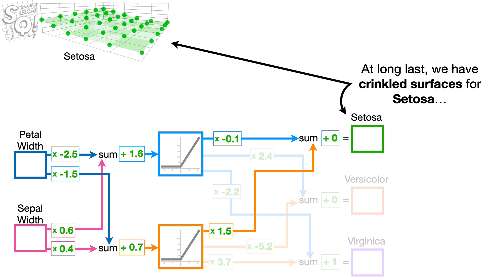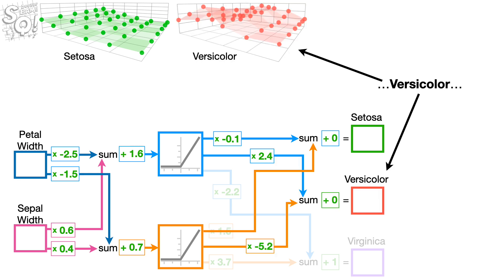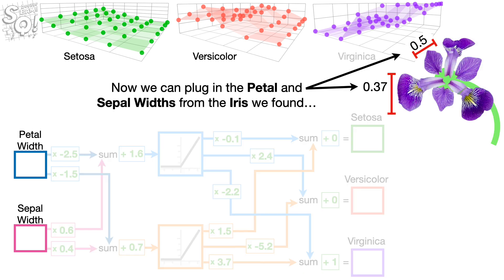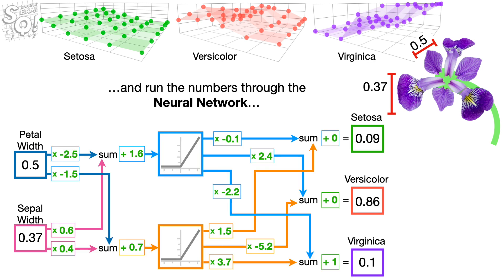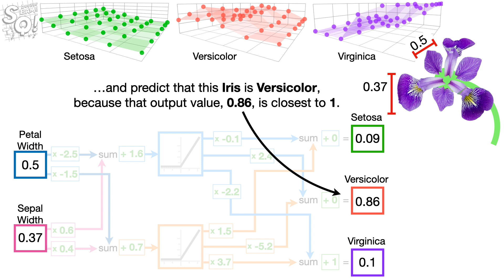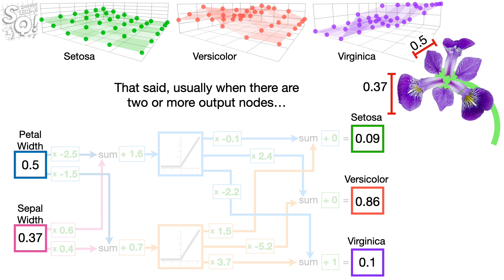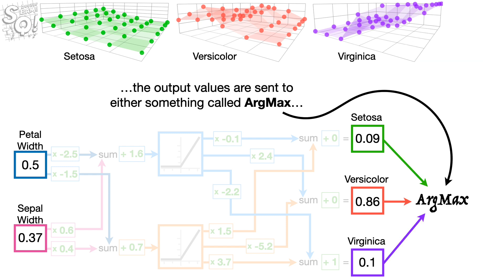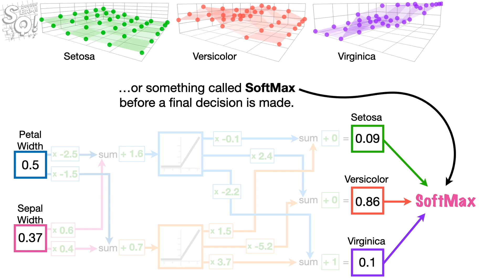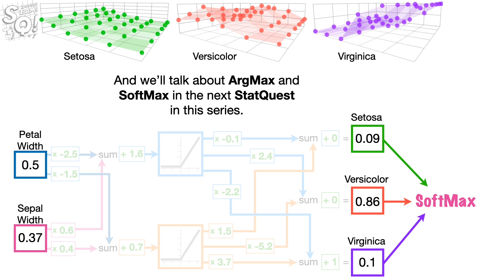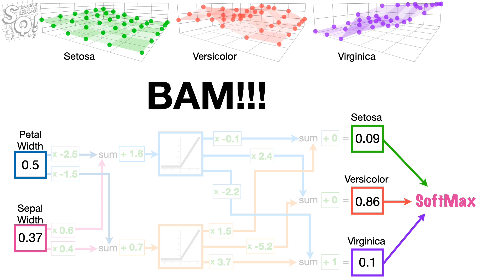At long last, we have crinkled surfaces for Setosa, Versicolor, and Virginica. Now we can plug in the petal and sepal widths from the iris we found, run the numbers through the neural network, and predict that this iris is Versicolor because that output value, 0.86, is closest to 1. That said, usually when there are two or more output nodes, the output values are sent to either something called argmax or something called softmax before a final decision is made. We'll talk about argmax and softmax in the next StatQuest in this series.